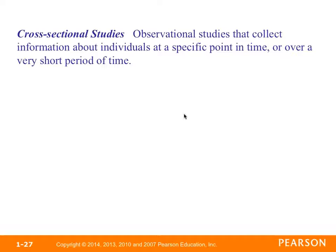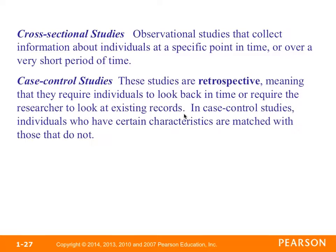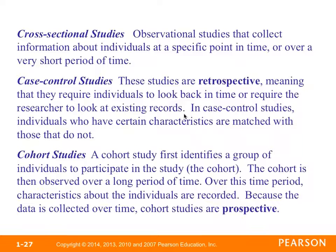There are several types of observational studies. Cross-sectional studies collect information about individuals at a specific point in time or over a very short period. Case control studies are retrospective — they require individuals or researchers to look back in time or at existing records. In case control studies, individuals who have certain characteristics are matched with those who do not. Cohort studies identify a group of individuals — the cohort — and observe them over a long period of time, recording characteristics throughout; because data is collected over time, cohort studies are considered prospective.